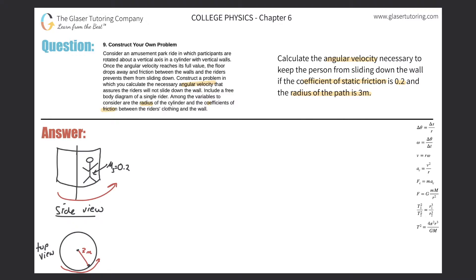Here we have a top view of the Gravitron as if you were looking down from an aerial perspective. The middle is the center and the person is on the periphery of the path, which is a circle. That radius will be three meters. The coefficient of static friction between the person's clothing and the wall is 0.2.